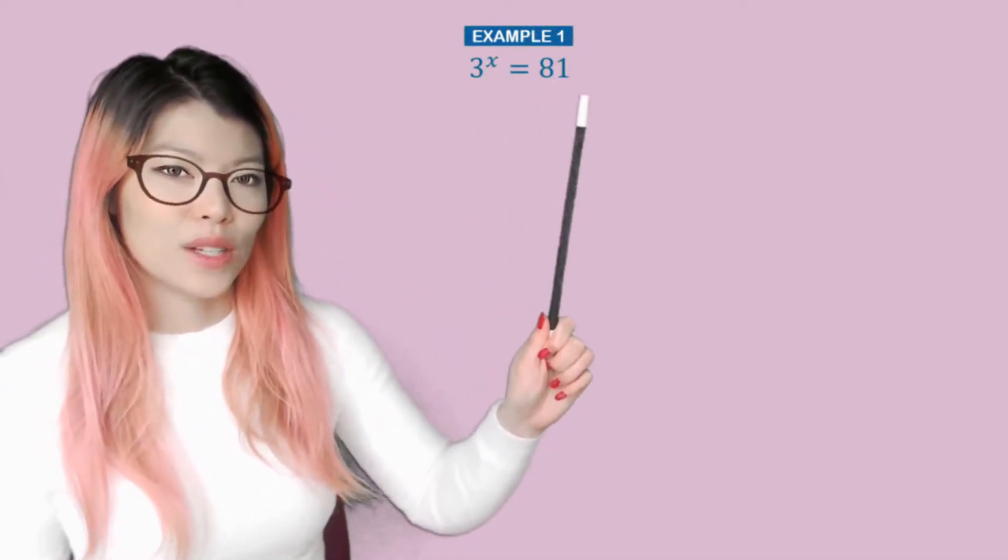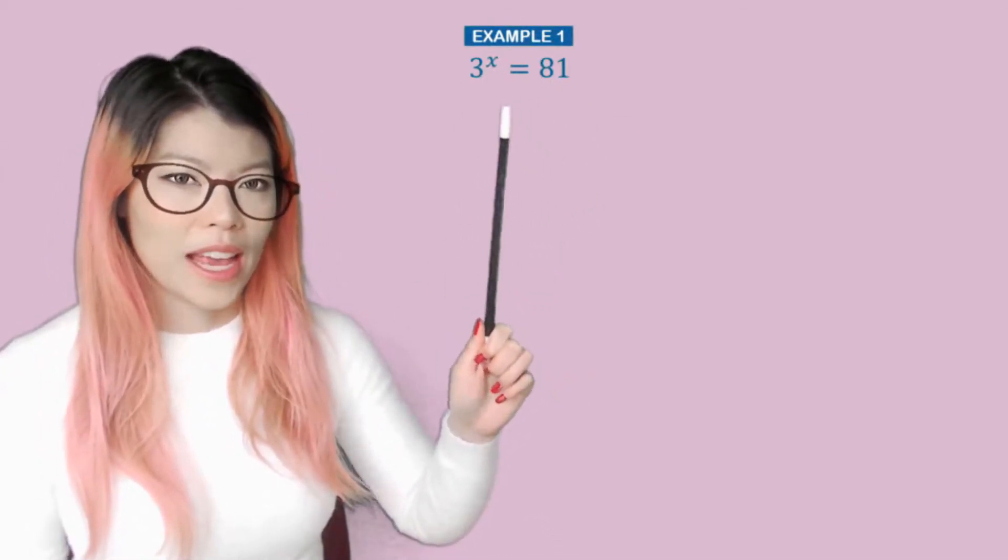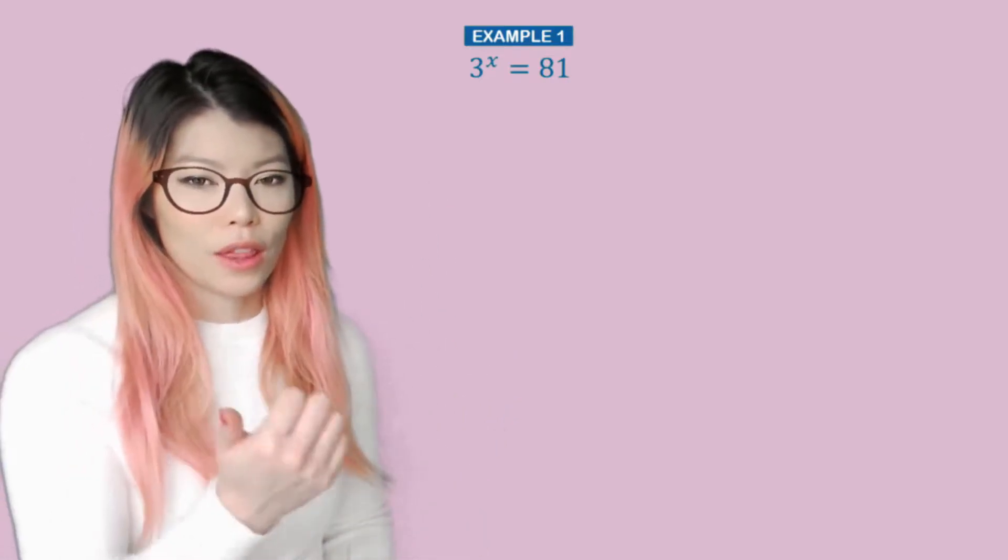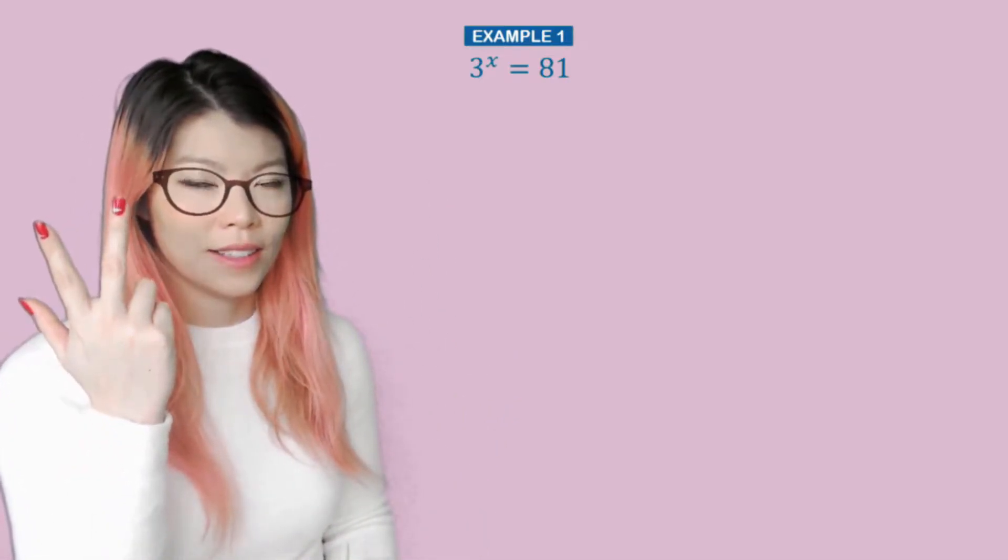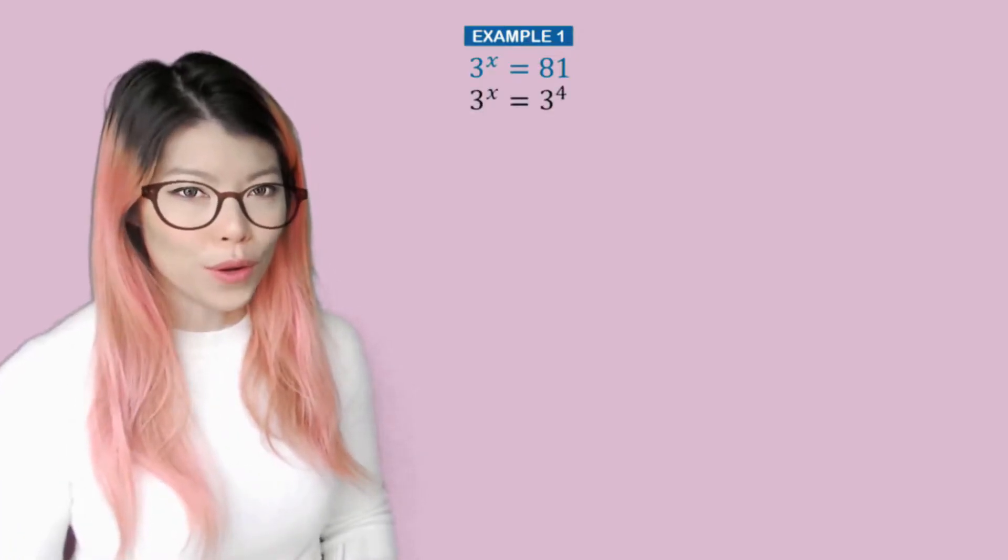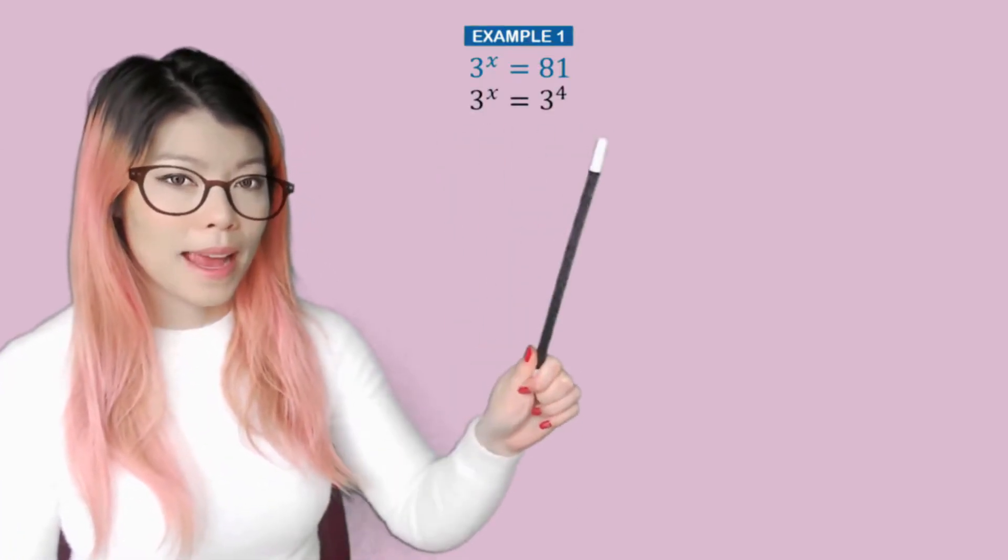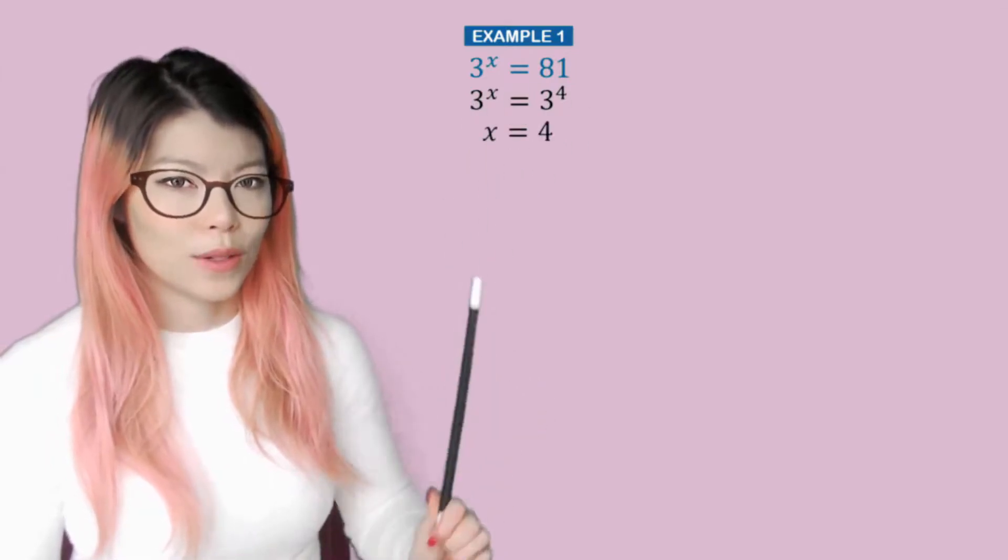Example 1: 3^x = 81. So 81 can also be written as 3, 9, 27, 81, which is 3 to the power of 4. So now that they have the same base, we can say that x is equal to 4.